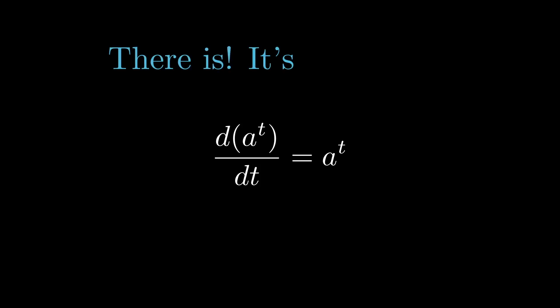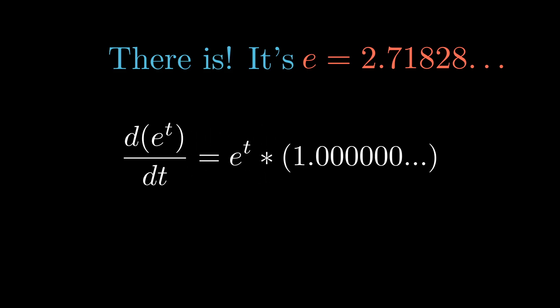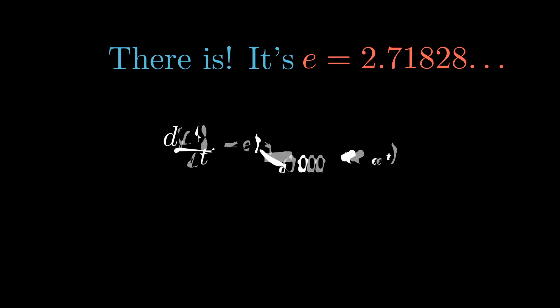That is about 2.71828. That is what defines the properties of E. It's that when you search for the proportionality constant it will give you 1. So we know that all exponential functions are proportional to their own derivative. But E to the t alone is the only function where the derivative is equal to itself.